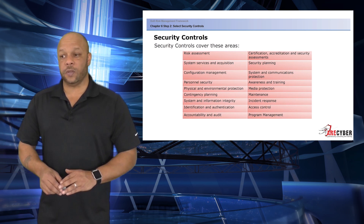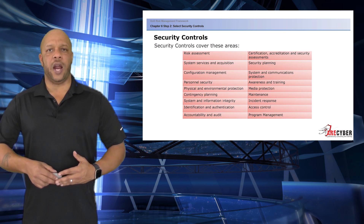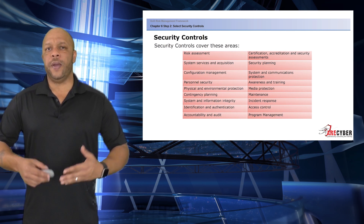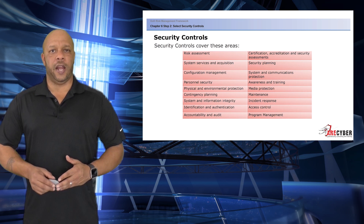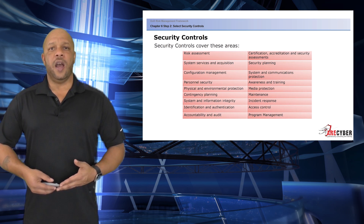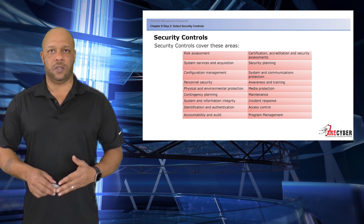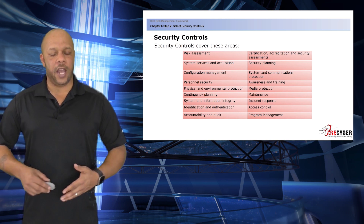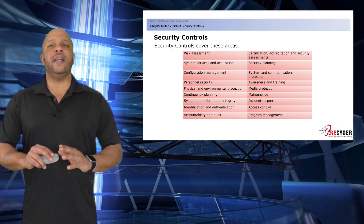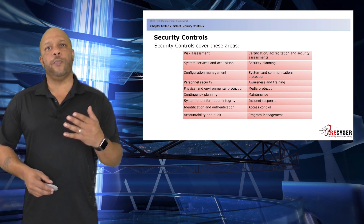The security controls themselves cover these basic areas: risk assessment, system services and acquisition, configuration management, personnel security, physical and environmental protection, contingency planning, system and information integrity, identification and authentication, accountability and audit, certification accreditation and security assessments, security planning, system and communications protection, awareness and training, media protection, maintenance, incident response, access control, and overall program management.